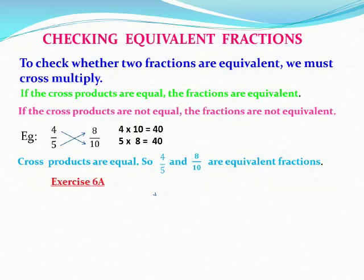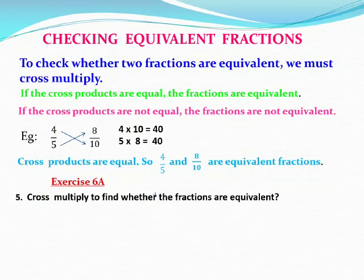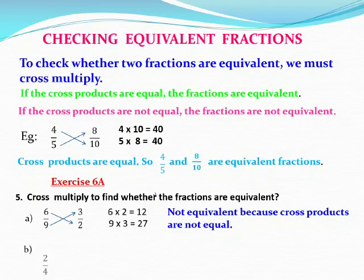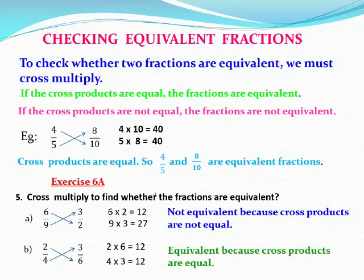We will see exercise 6a, question number 5: cross multiply to find whether the fractions are equivalent. First question: 6 by 9 and 3 by 2. Cross products: 6 times 2 equals 12, and 9 times 3 equals 27. They are not equal, so 6 by 9 and 3 by 2 are not equivalent fractions. Next: 2 by 4 and 3 by 6. Cross products: 2 times 6 equals 12, and 4 times 3 equals 12. Cross products are equal, so 2 by 4 and 3 by 6 are equivalent fractions.